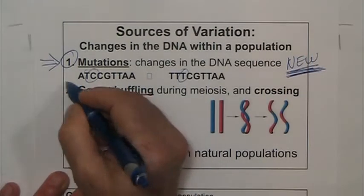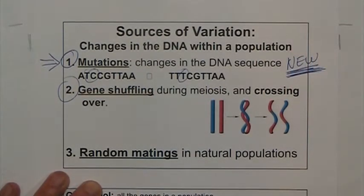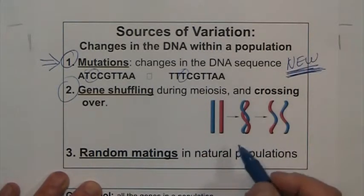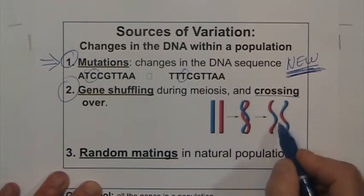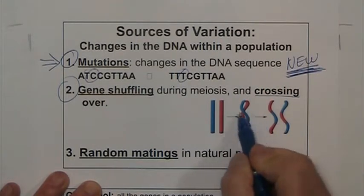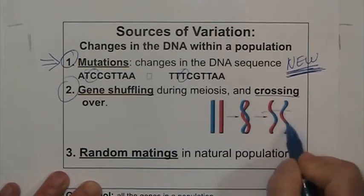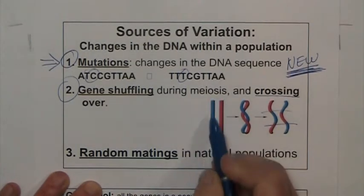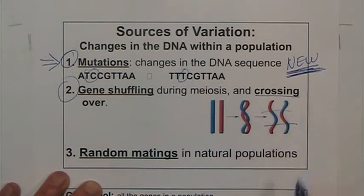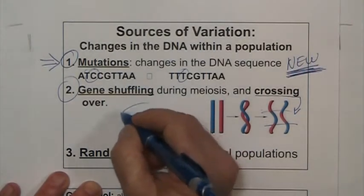The other source of variation — but one that is not creating new traits, just shuffling and mixing things — occurs during meiosis. One step is during crossing over, when homologous chromosomes exchange pieces. The blue and the red exchange pieces — that's exchange of homologous segments during crossing over.